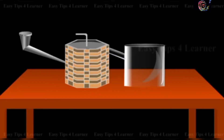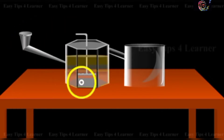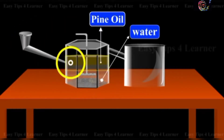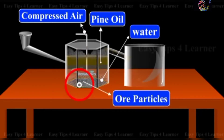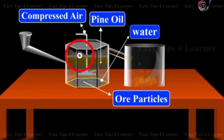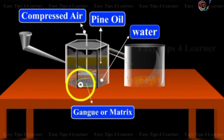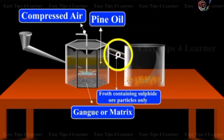In the froth flotation process, the powdered ore is mixed with water and a little pine oil, which is a foaming agent. The mixture is stirred vigorously by blowing compressed air. The oil forms foam or froth with the air, and the ore particles stick to the froth which rises to the surface, while the rocky and earthy impurities — the gangue or matrix — are left in water. The froth is skimmed off and allowed to subside to get the concentrated ore.